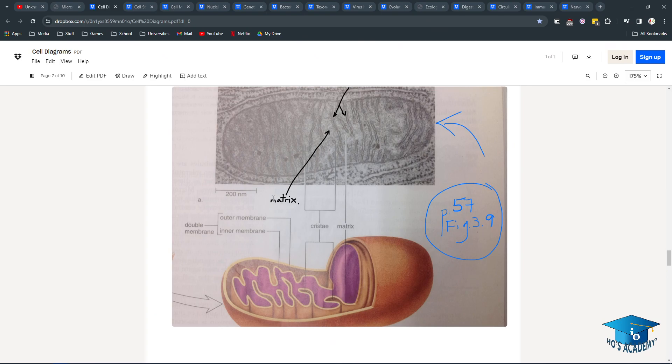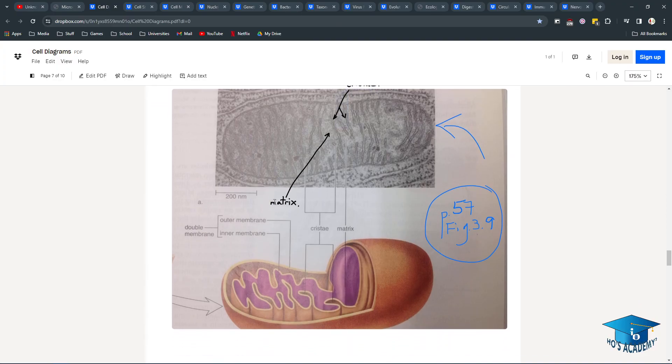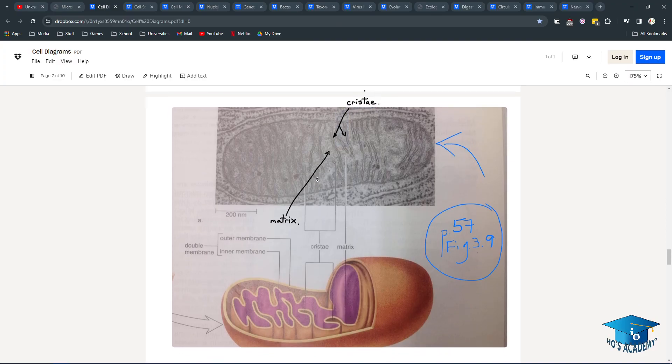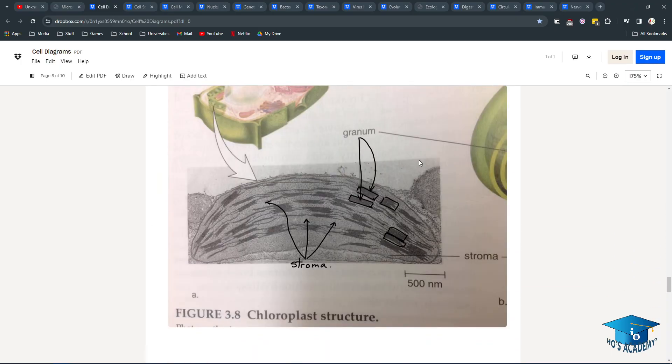So the matrix is the space in between and the cristae are the folds. I don't know how you remember this. Maybe you remember that matrix is a place, like the movie. So that's how you'll remember that.